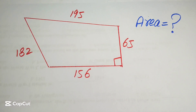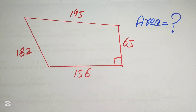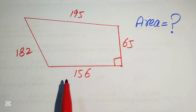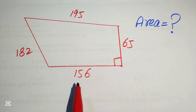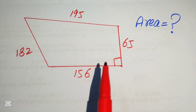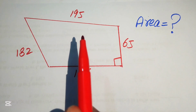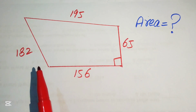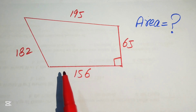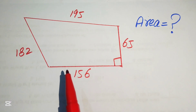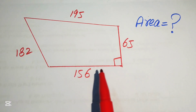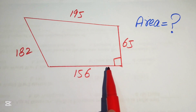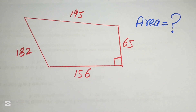Hello everyone, welcome. We have a nice quadrilateral geometry problem from the Math Olympiad. The side lengths are 156, 65, 195, and 182, and there is a right angle in the quadrilateral. Our target is to find the area of this quadrilateral.